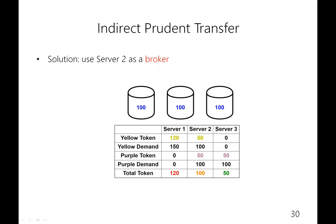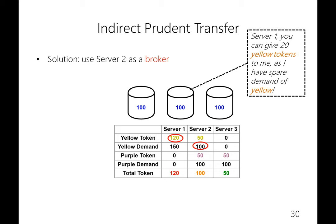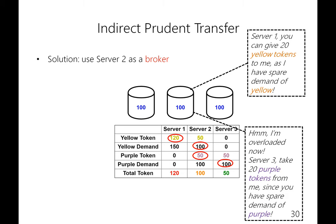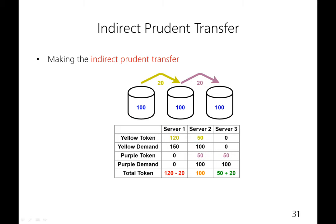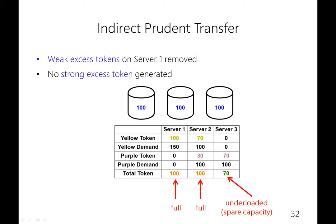Therefore, the idea is to use server 2 as a broker. Since server 2 has spare demands for yellow, it can accept the weak excess tokens from server 1. Meanwhile, we don't want server 2 to become overloaded. Since server 3 has spare demands for purple, we can simultaneously move purple tokens from server 2 to server 3. The whole move is: move 20 yellow tokens from server 1 to server 2, and 20 purple tokens from server 2 to server 3. In the resulting configuration, the weak excess tokens on server 1 are removed while no strong excess tokens were generated.